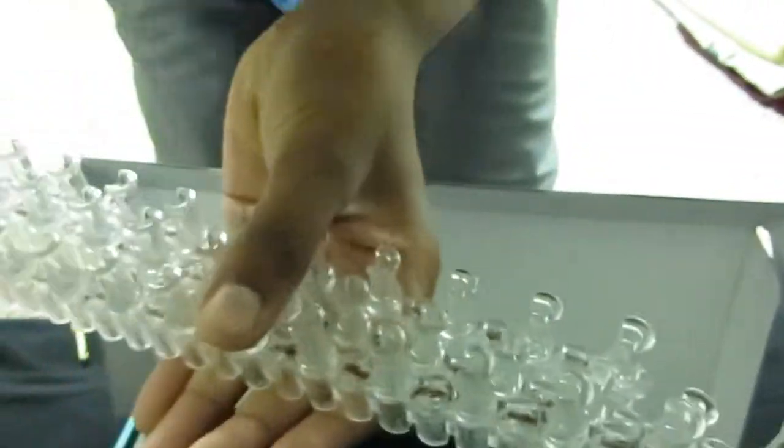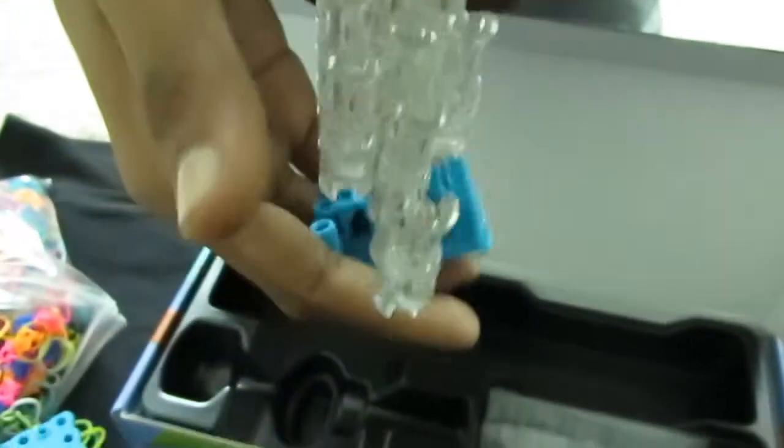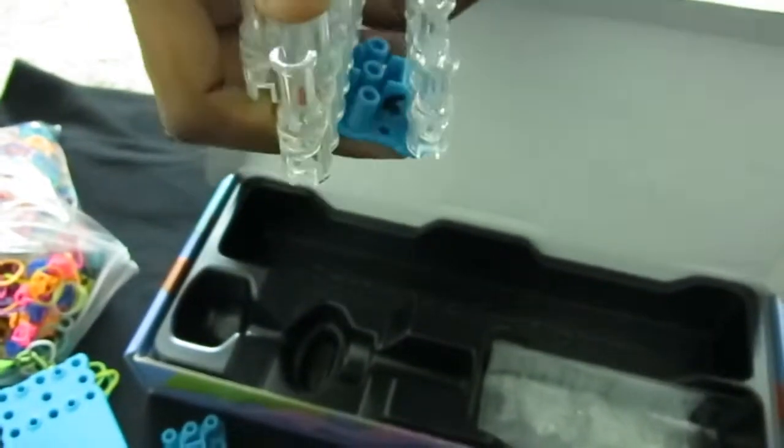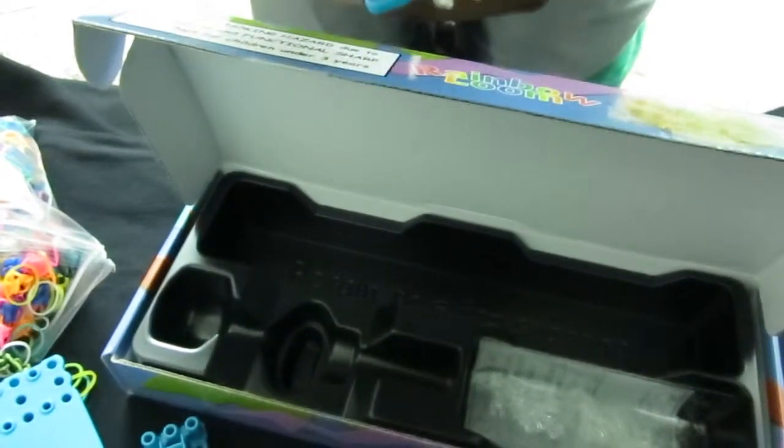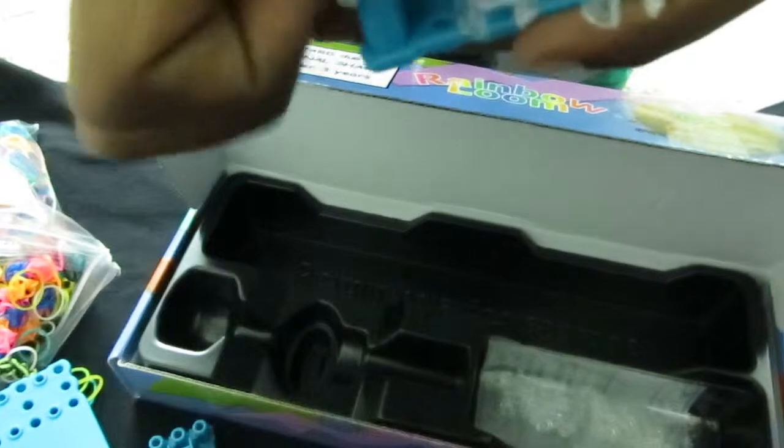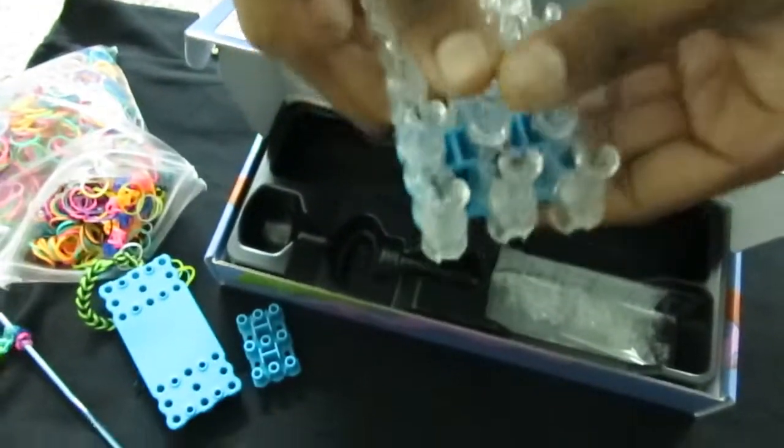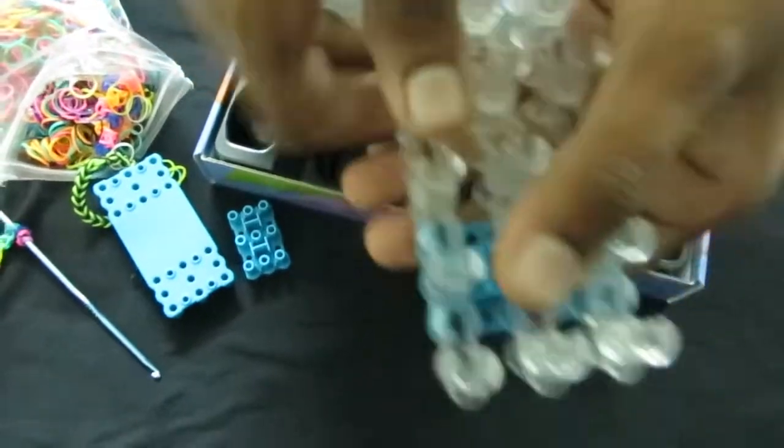And there are two formations in Rainbow Loom. One is the formation you just saw, the triangle type. And now I will replace the pins to show you the square type formation. The square type looks like this. It's squared so when you place the rubber bands they come in a square rather than a triangle.